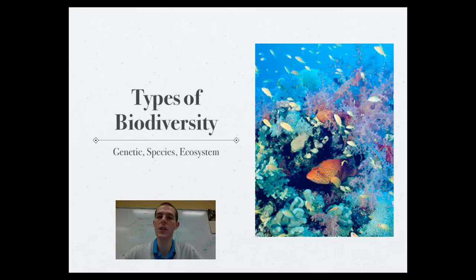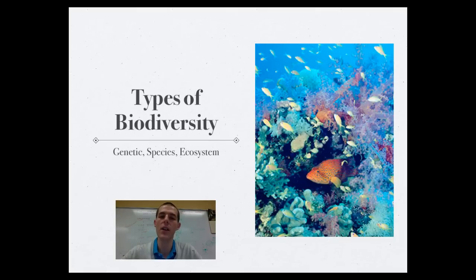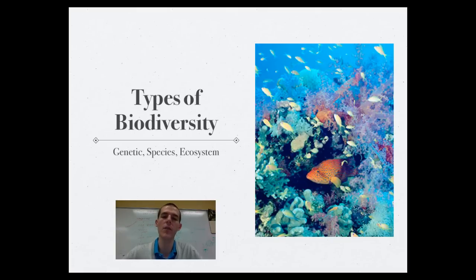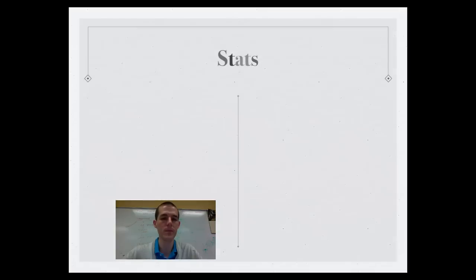The second is species biodiversity — the variety of species in an area. An area with more species is more stable and resilient than one with fewer species. The third is ecosystem diversity — the number of different ecosystems around the world. So there are essentially three levels when looking at types of biodiversity.